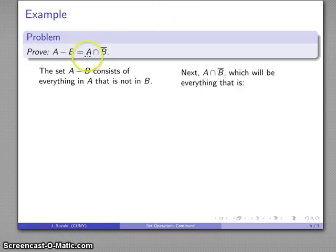On the other hand, consider the set A intersect B complement. In order to be in this set, you have to be both in this and also in this. So what you have to be is you have to be in A and not in B.